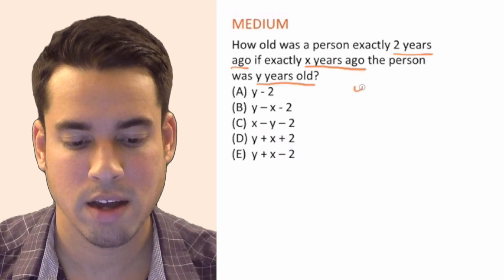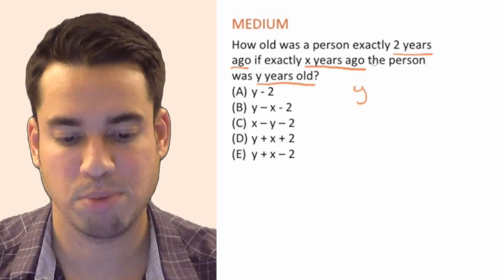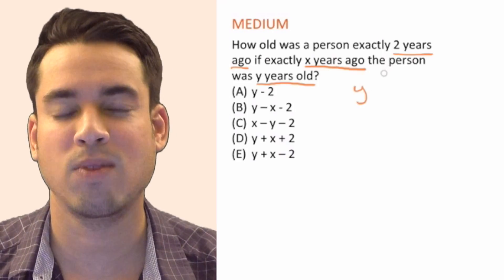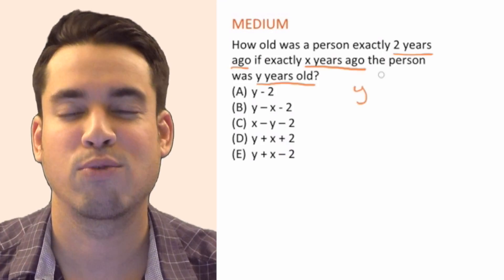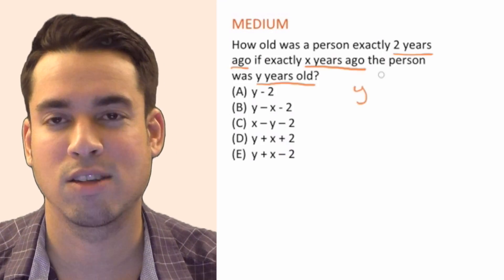Well think about it like this: if they were Y years old X years ago, then if we simply add X, the number of years ago this age was taken, it's going to get us to present day.